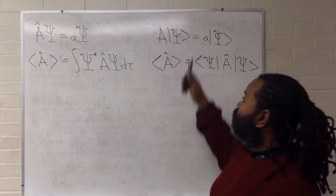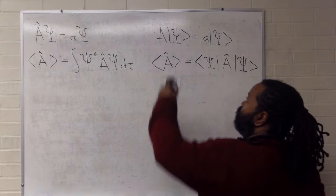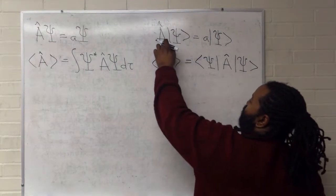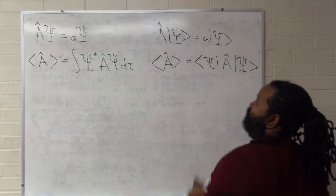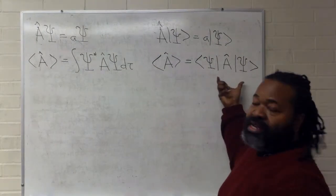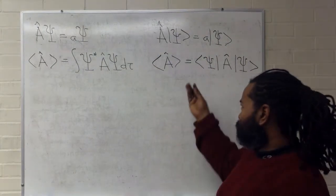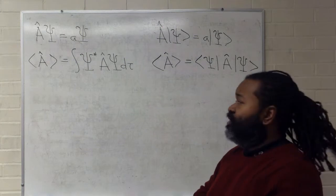Over here, written in Dirac bracket notation, we have the same thing where this is an operator acting on a function, giving us a scalar times that function, and here we have written out in that notation the average value.